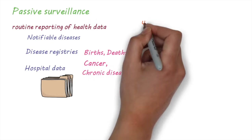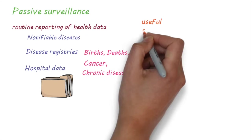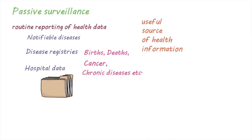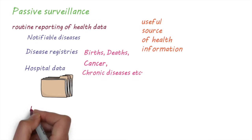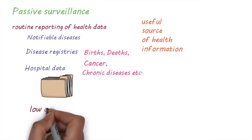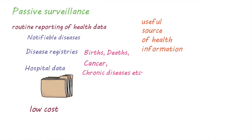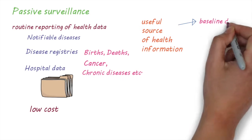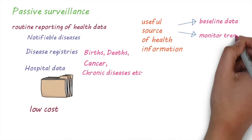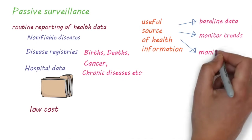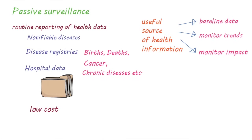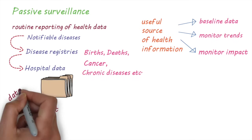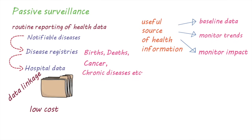Passive surveillance is a valuable source of health information. One of the biggest advantages is that it's generally inexpensive. It can be used to provide baseline data on the health of a population, monitor trends, or monitor the impact of an intervention. Also, different types of these data sets can be linked to provide a complete picture of health.